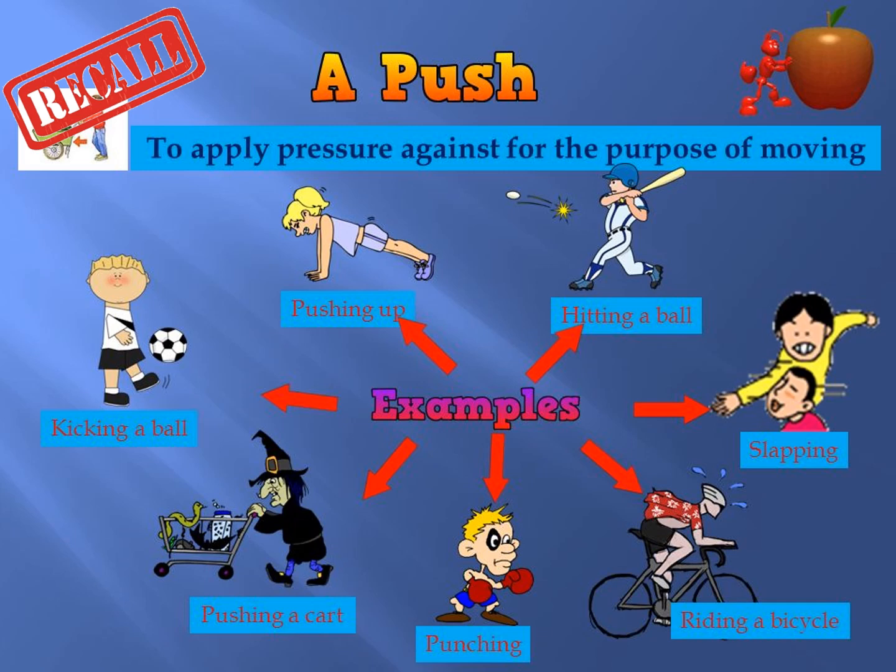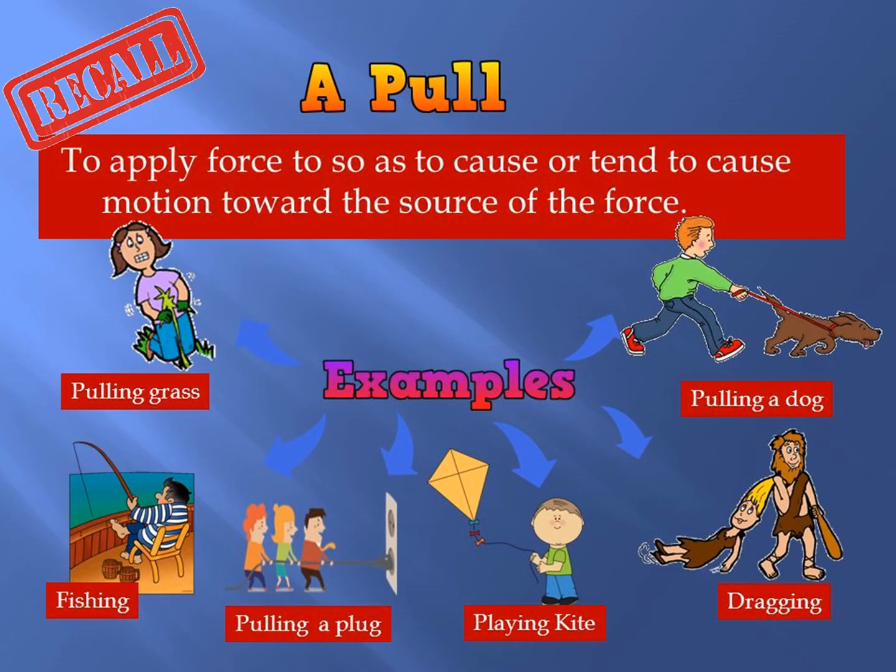What are the examples of a push? A push is to apply pressure against an object for the purpose of moving. If you look at the picture, we have here a lot of examples: kicking a ball, pushing up, hitting balls, slapping, riding a bicycle, punching, and pushing cars.